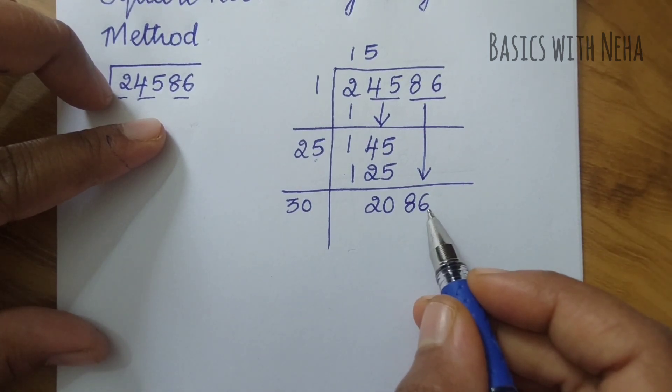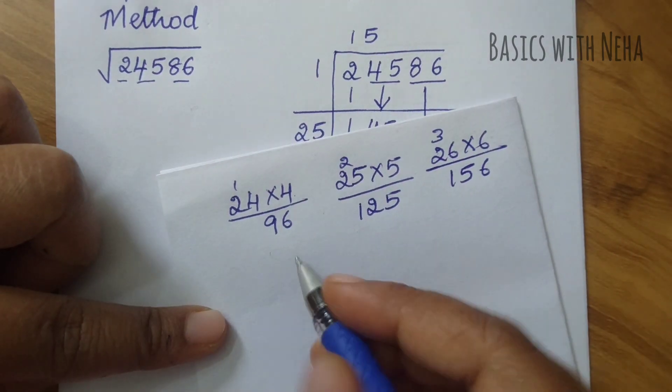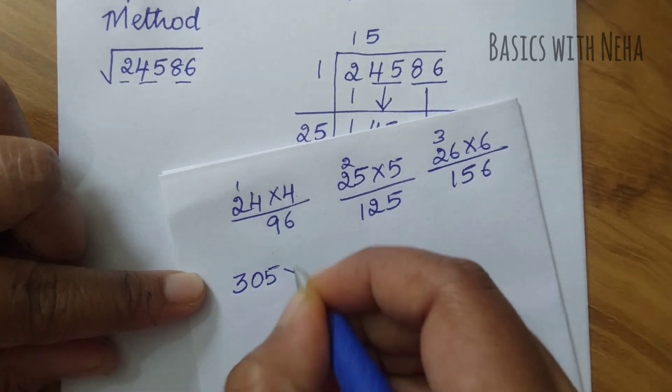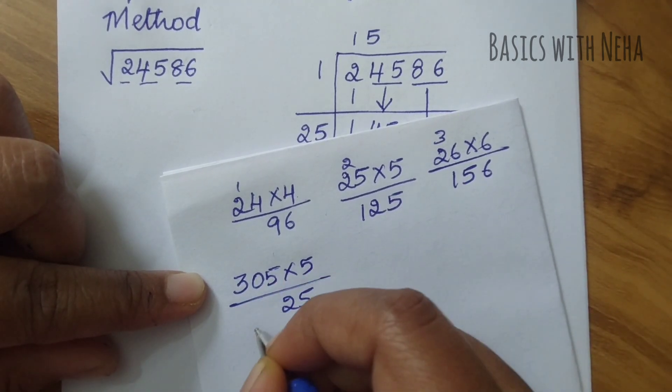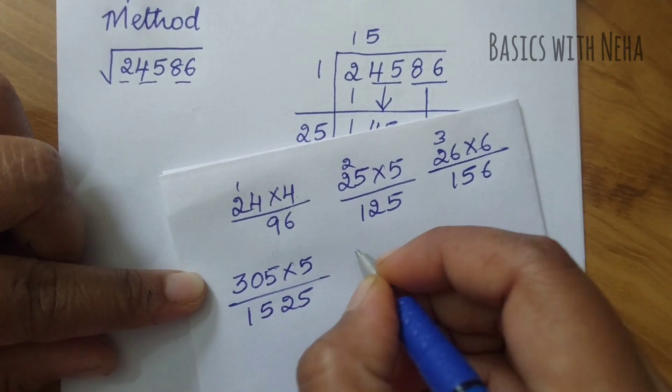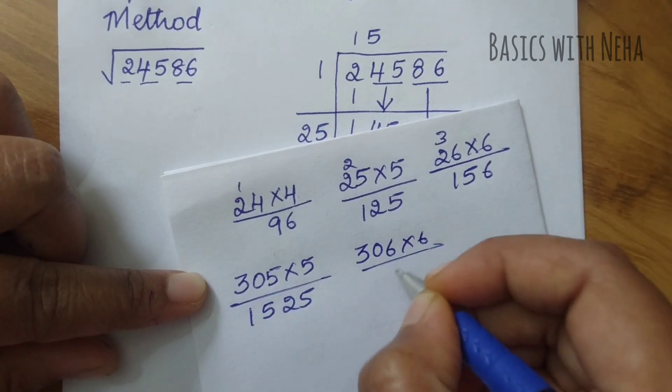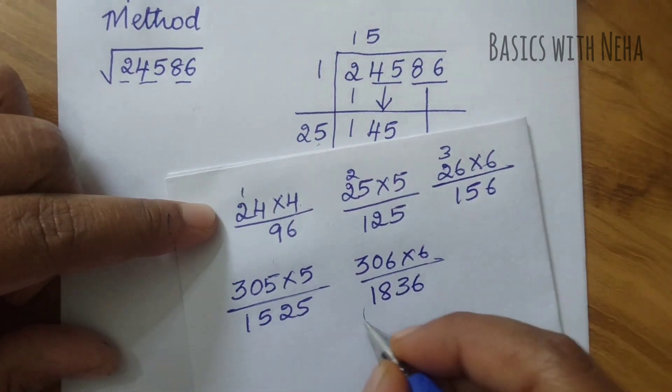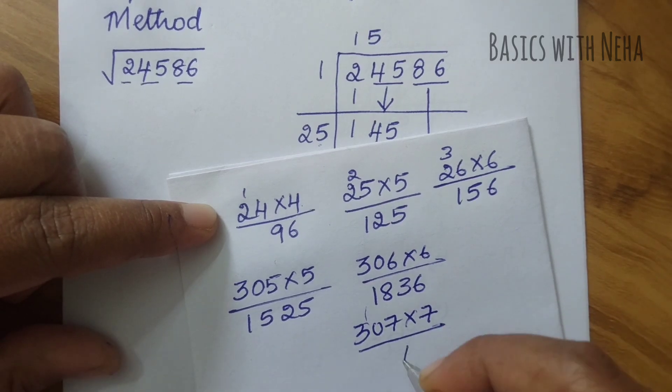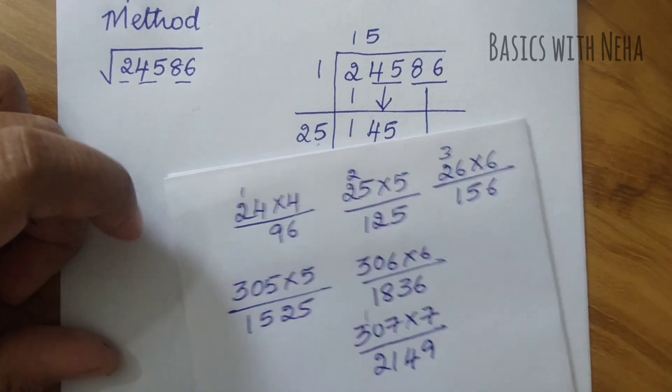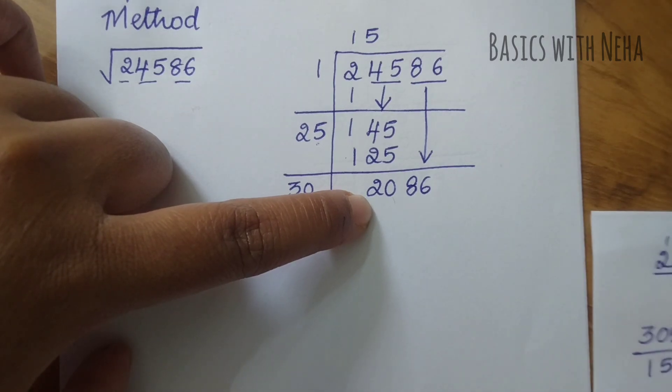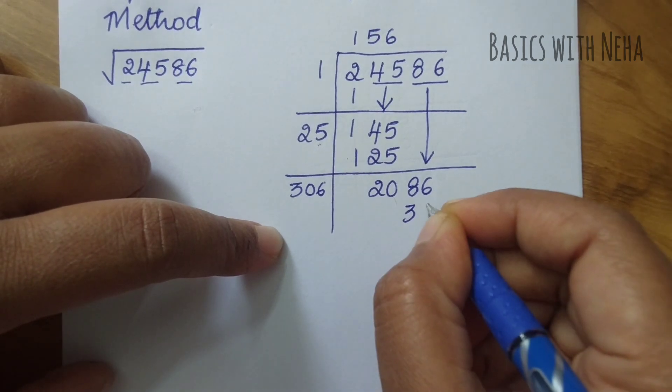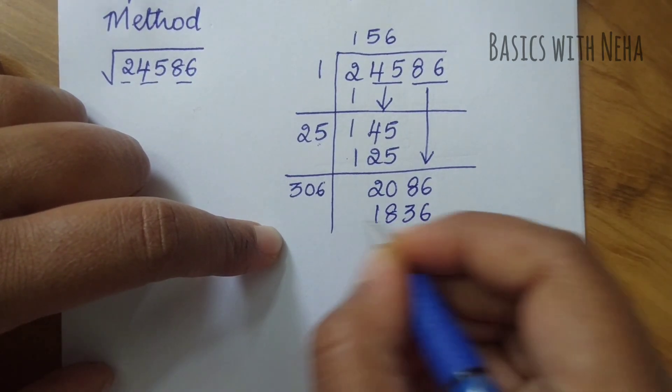To this 30, I have to put one number and multiply with the same number in such a way that I'm going to get 2086. Let me take the calculation again. 305 into 5 is 1525. Let's try 306 into 6, that's 1836. So I have to go with 306.